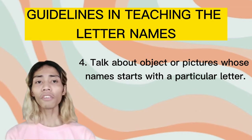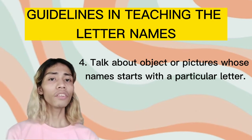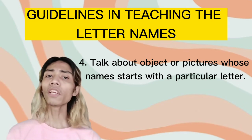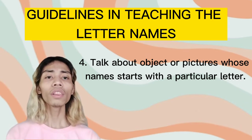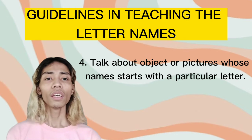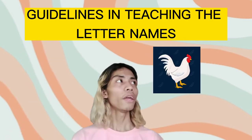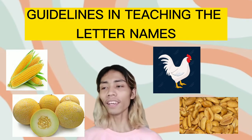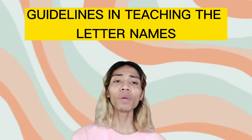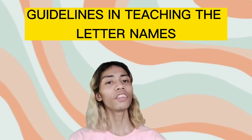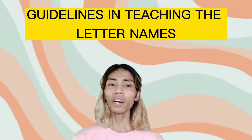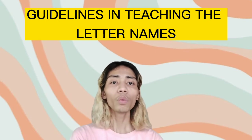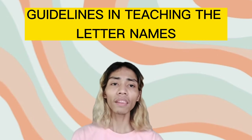Number four: talk about objects or pictures whose names start with a particular target letter. For example, if the first letter of the child's name starts with letter M, showing pictures that start with this letter — such as Manok, Mais, Mani, and Melon — can help them visualize the letter. Furthermore, vocabulary development is integrated with alphabet pronunciation.